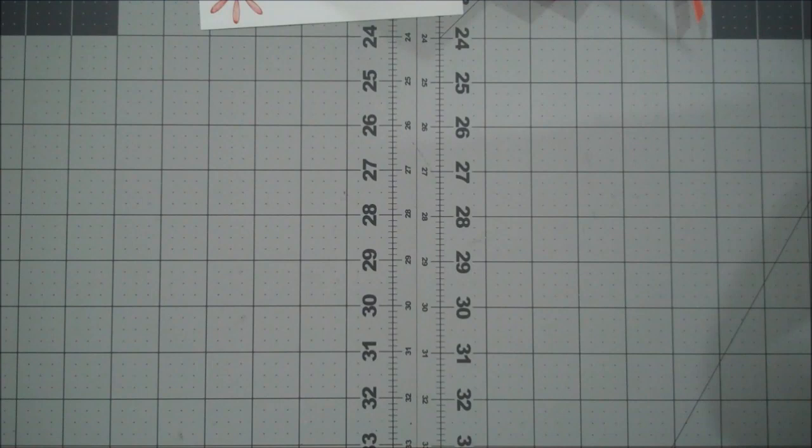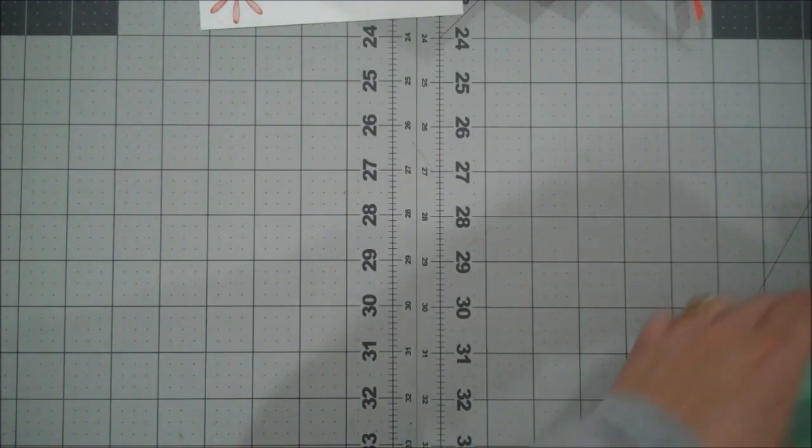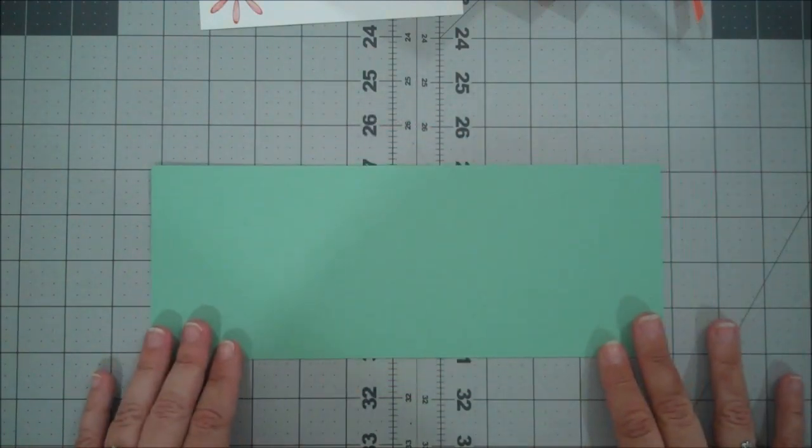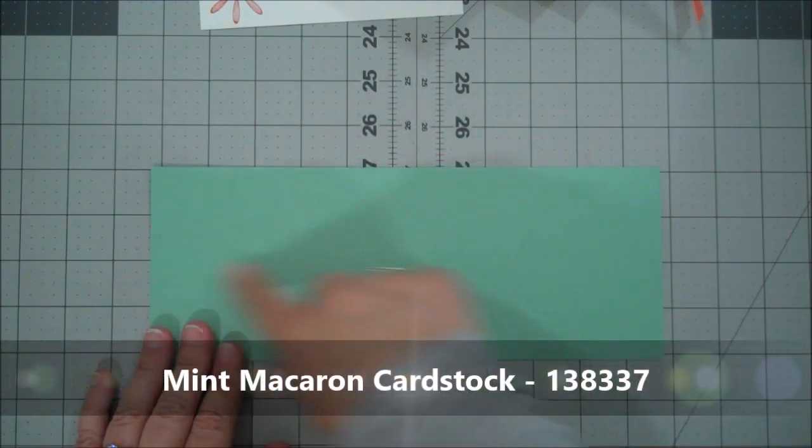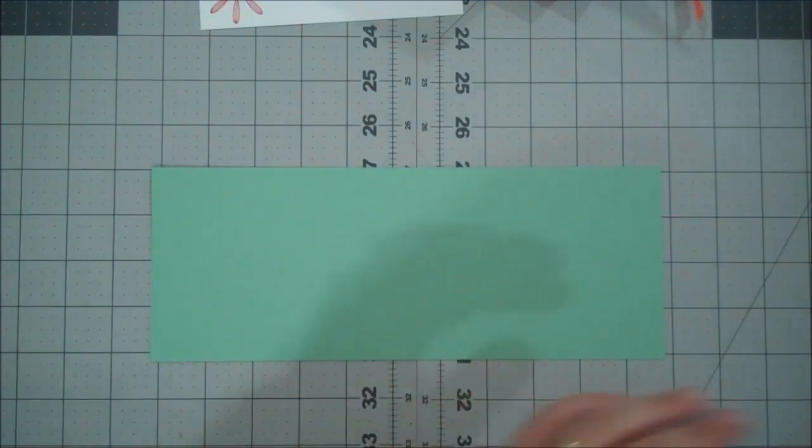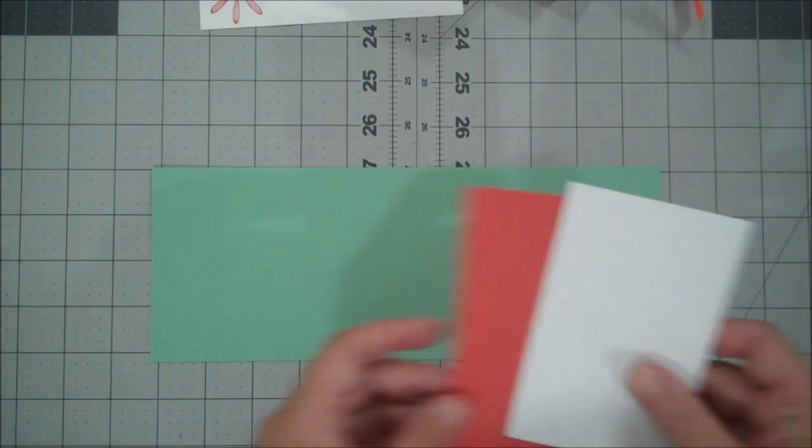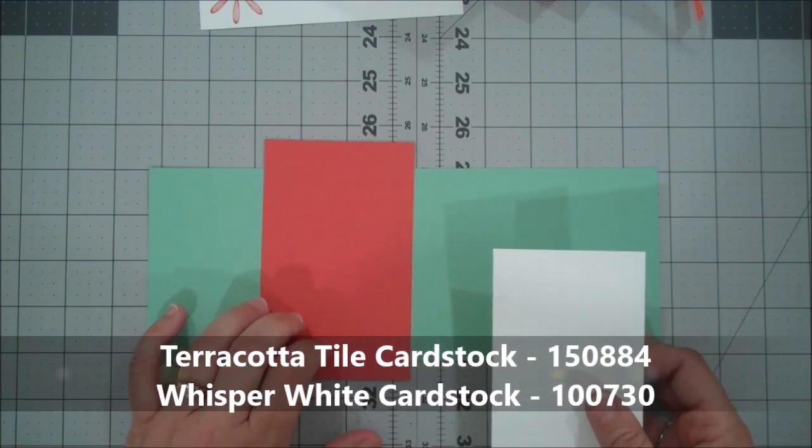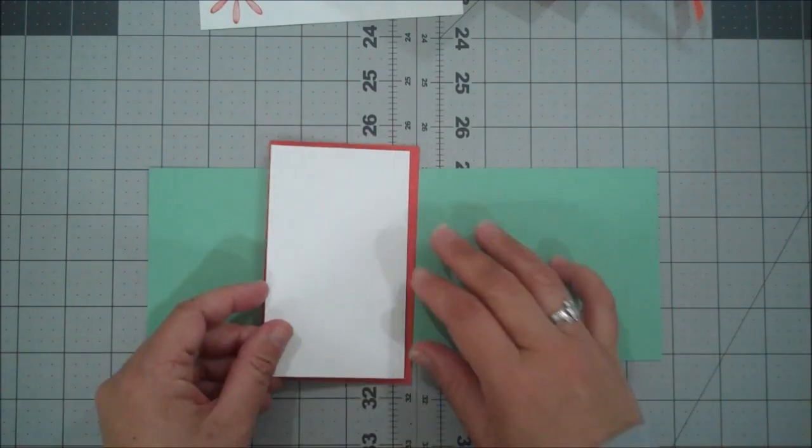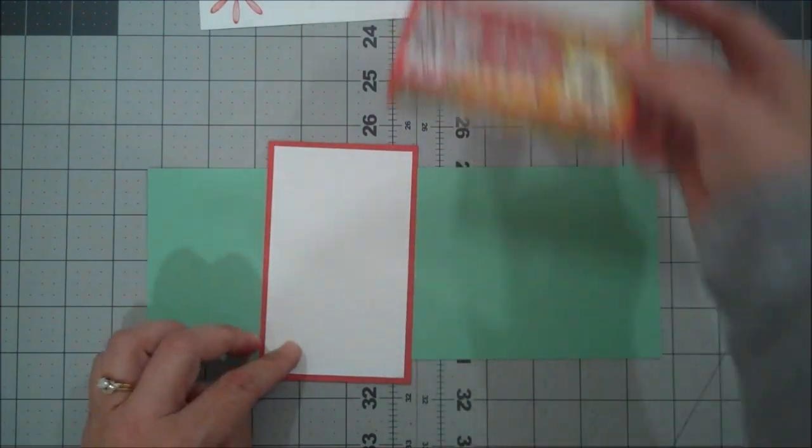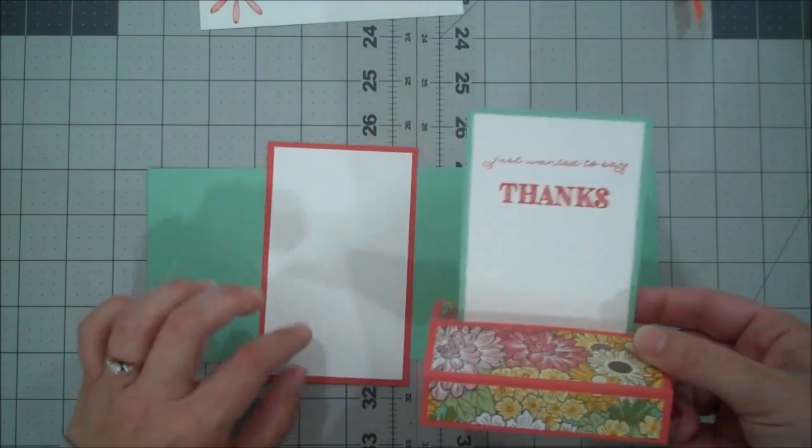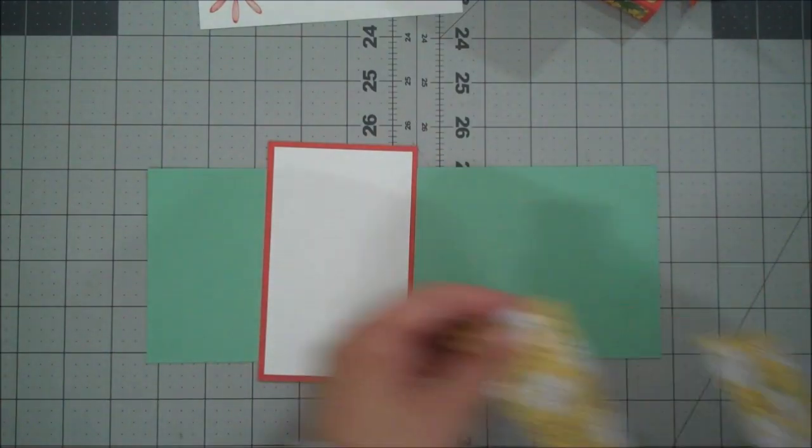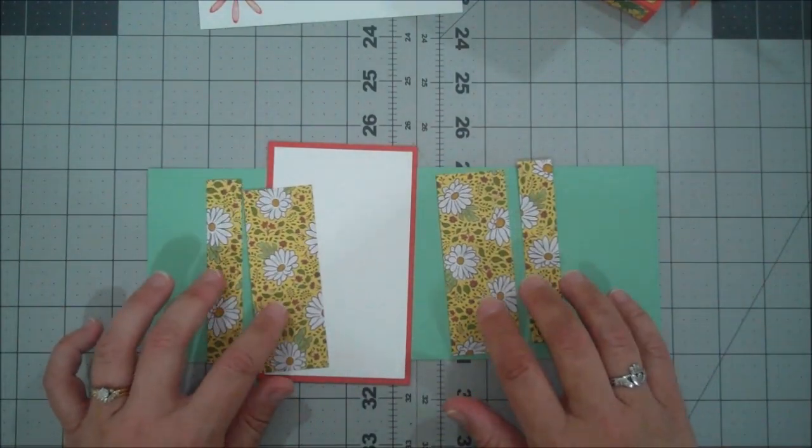So let's go ahead and jump in. So for our base, for our pop up stand card, we are using a piece of mint macaron. This is four and a quarter by eleven. We are going to do a bunch of scoring on this. We are also using a piece of terracotta tile. This is three and a quarter by five and a quarter. We have a piece of whisper white that is three by five. This is going to be for our sentiment or wherever you want to write.